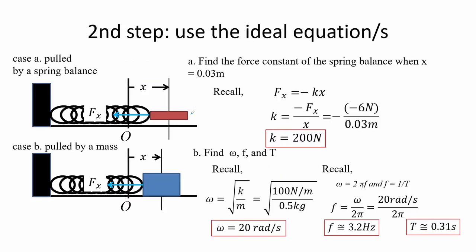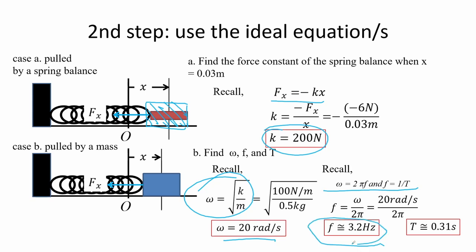For letter A, we recall the restoring force expression: F equals negative spring constant times displacement. Substituting F equals negative 6 N and X equals 0.03 meters — noting that displacement and force have opposite signs — we get a spring constant of 200 N/m. For letter B, the angular frequency equals the square root of K over M, giving 20 radians per second. The frequency equals angular frequency over 2π, which is about 3.2 Hz. The period, inversely proportional to frequency, is about 0.31 seconds.